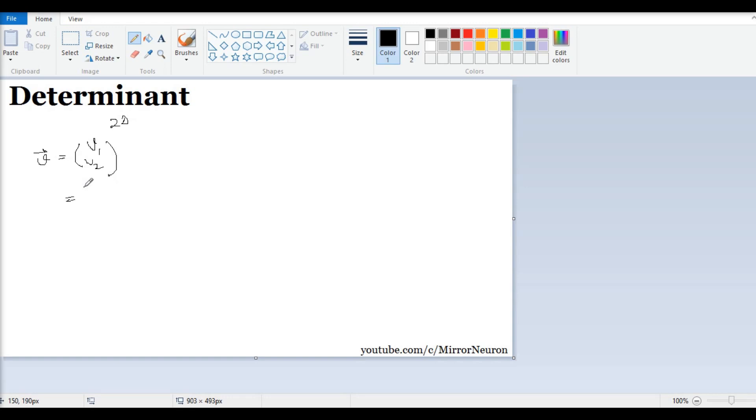This can be written as V1 times (1,0) plus V2 times (0,1) because if I add them back as vectors I will get back to V1 and V2. I am just rewriting it this way. This means that I can represent this vector if I have to represent it in x and y axis.